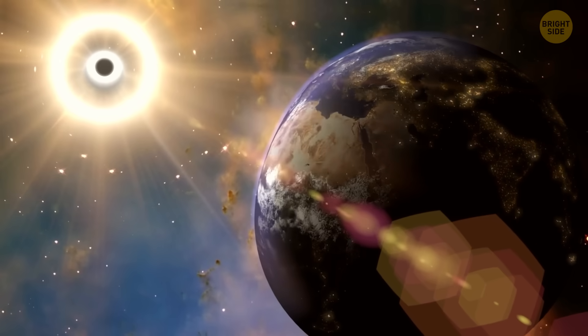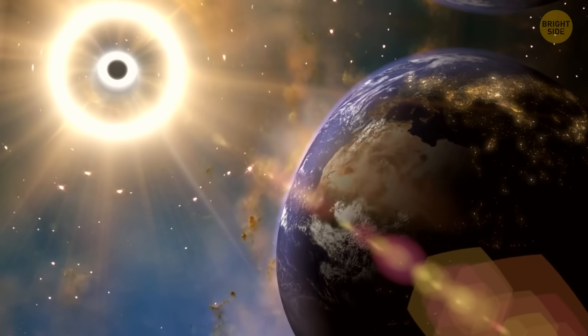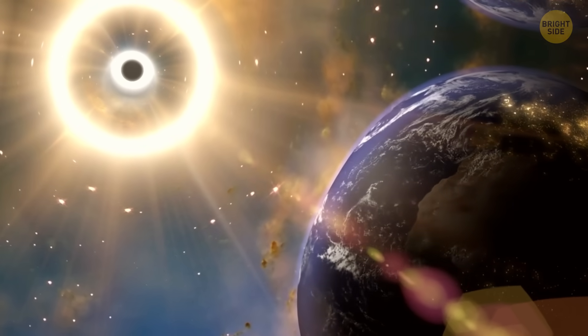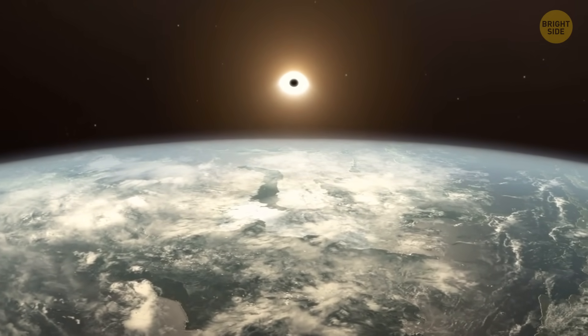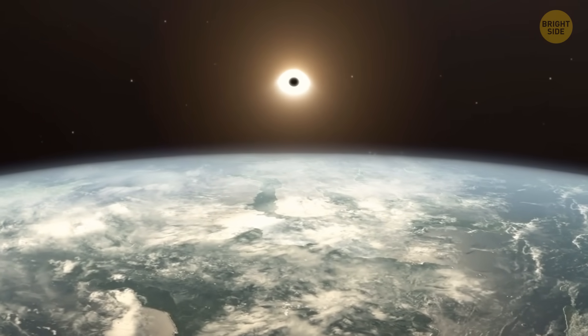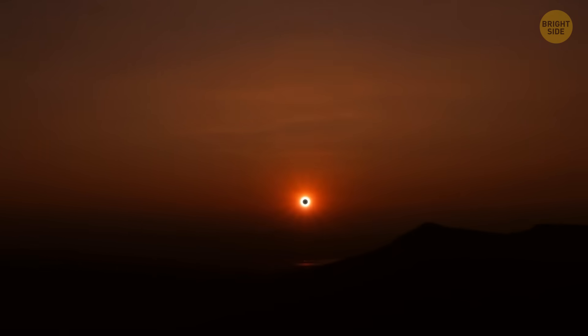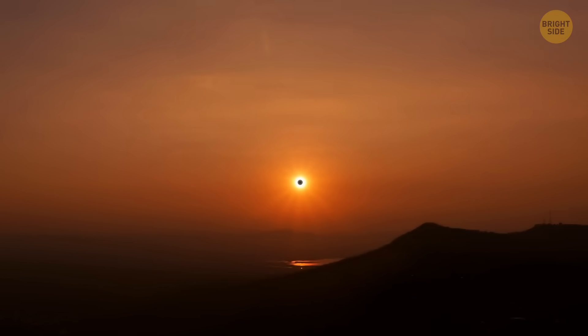Even if a black hole, the same mass as the Sun, replaced our Sun, Earth wouldn't fall into it. The black hole would still have the same gravity as the Sun, and Earth would continue orbiting it, just like it orbits the Sun today. It would get much colder, though, so we wouldn't survive such a replacement in any case.